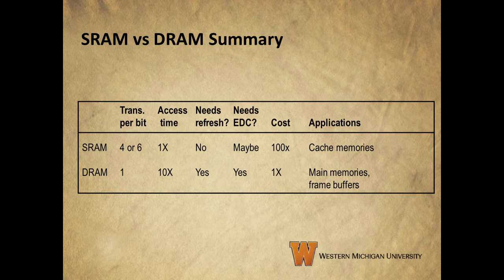First let's make sure we're clear on what all the terms here mean. The transistors per bit column means how many transistors per bit are used. You can see that SRAM uses four or six transistors per bit while DRAM uses only one. The next column addresses the relative access times between the two types. This column indicates that the access time for DRAM is ten times as long as the access time for SRAM, so DRAM is significantly slower.